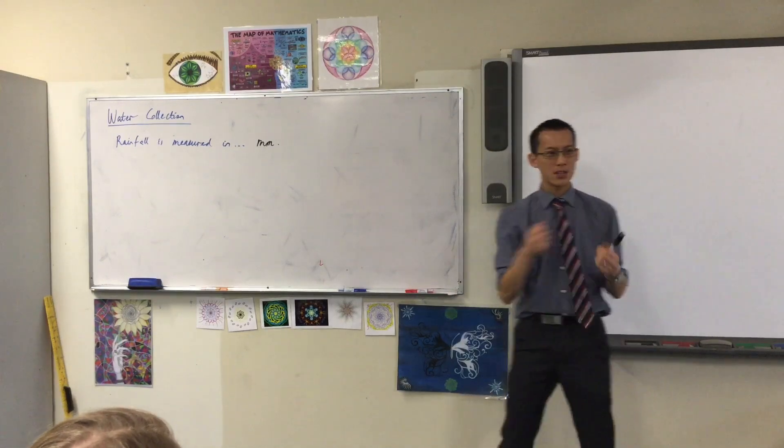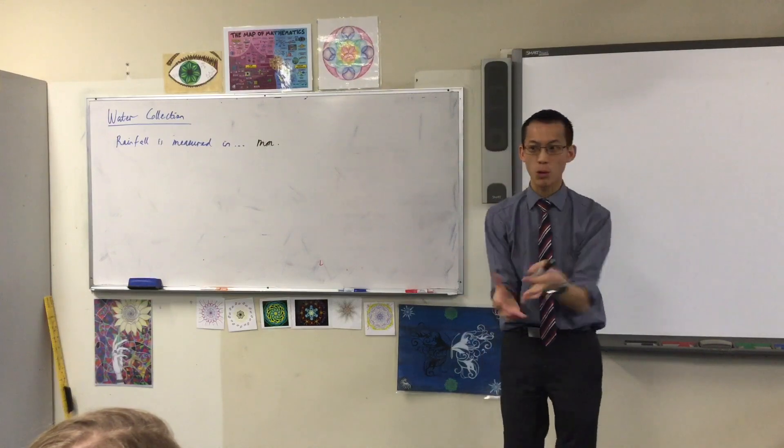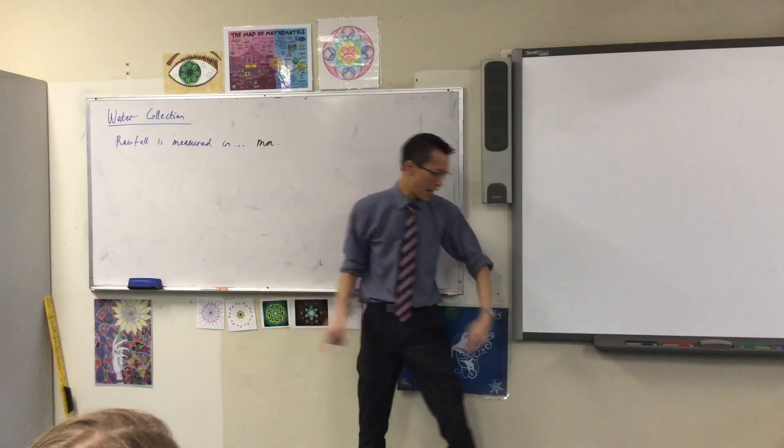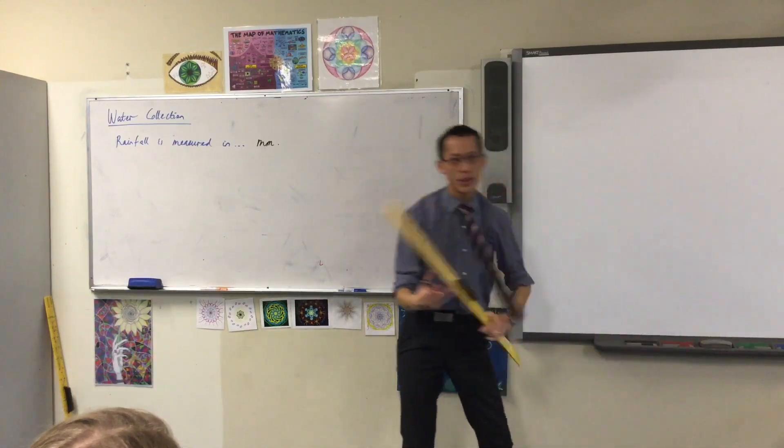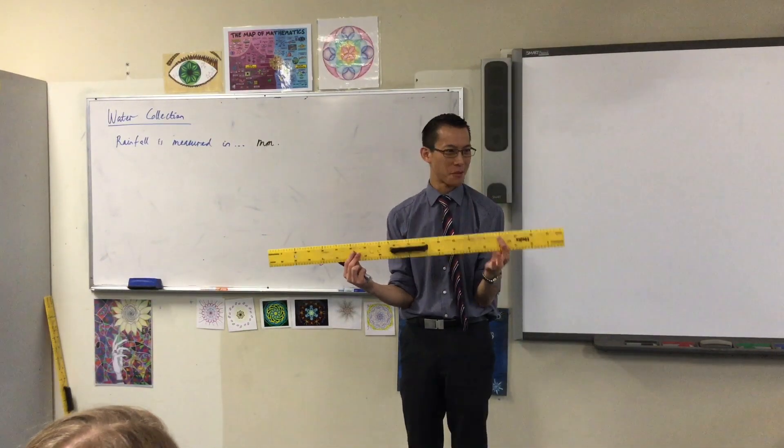I always found this quite strange because rain takes up like 3D space. That's volume, or capacity at least, right? So why are they measuring it with the same thing that I measure lines with? It's not like rain arranges itself in a line. So what's with that?